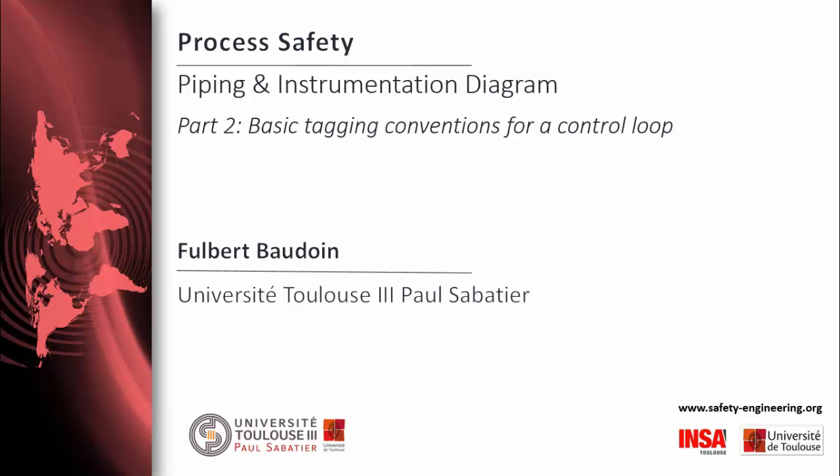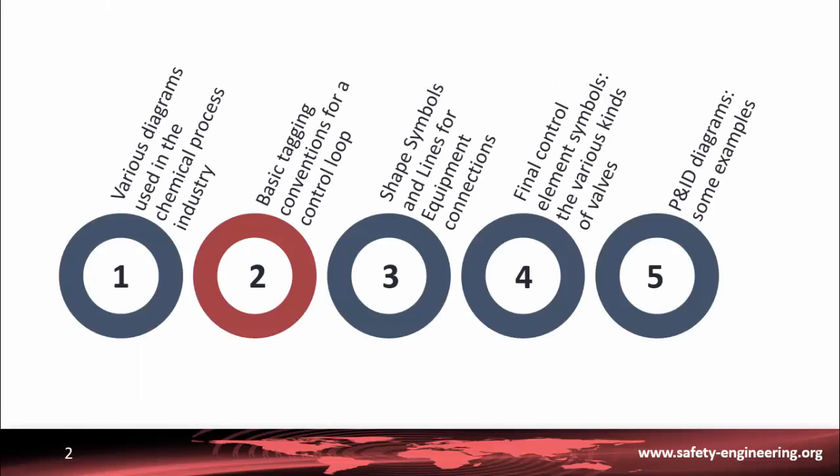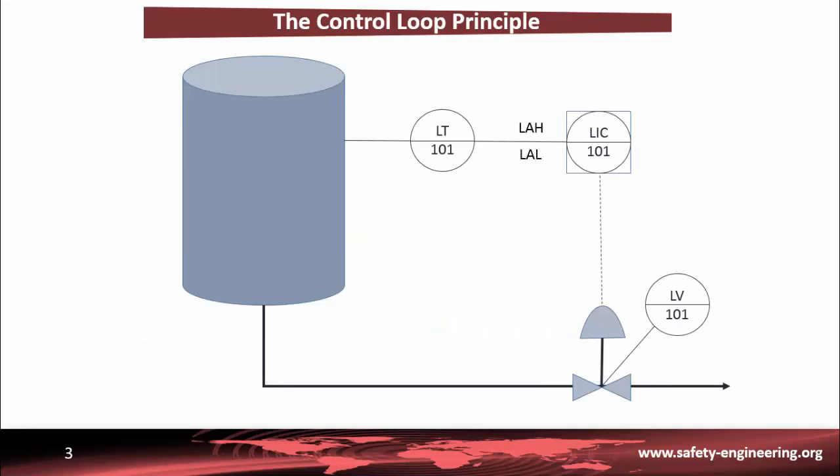Hello everybody, my name is Fulbert Baudoin. In the previous part we took a look at global diagrams, and in this part we are going to show you how to design a P&ID diagram for a control loop, and more specifically the basic tagging convention from the ISA 5.1 standard.